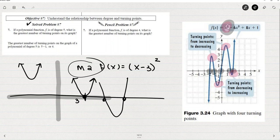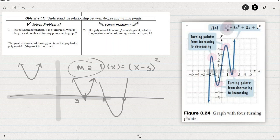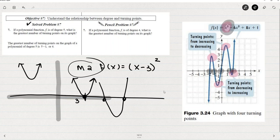So if the greatest number of possible zeros was five, then the greatest number of turning points is going to be four, one less than that. So five minus one.